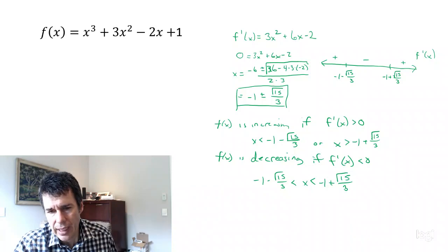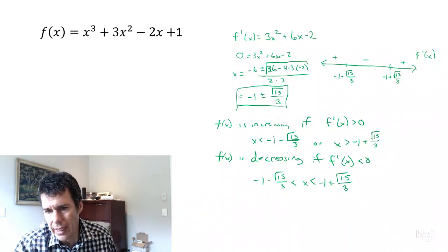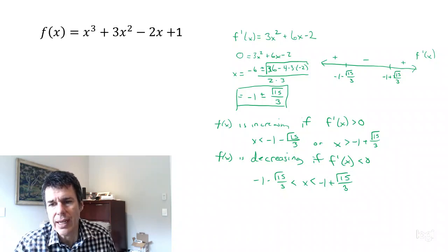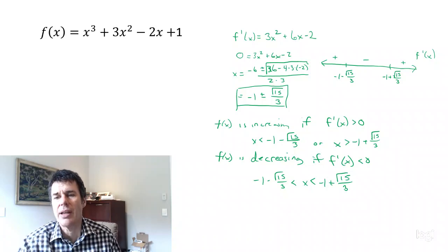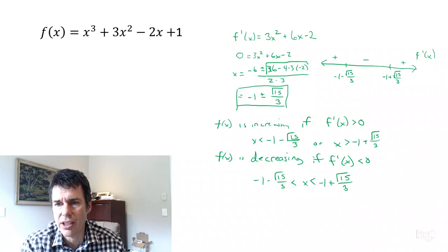So f of x is decreasing when x is between negative 1 minus square root of 15 over 3 and negative 1 plus square root of 15 over 3 — that's because the derivative is less than 0 on that interval.